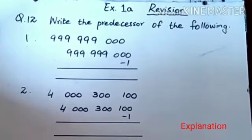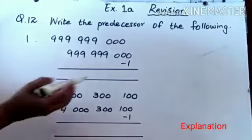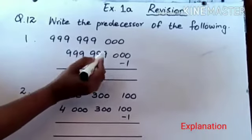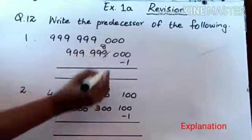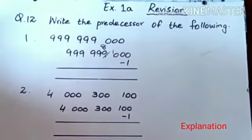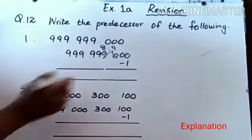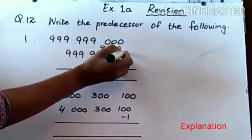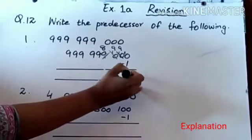Predecessor means one step back. So I will minus 1. If 0 is at the top position, then you have to take carry. I will take carry from this digit. It will be 8. It becomes 10. Now it is 9. Now this is 10. 10 minus 1 is 9.